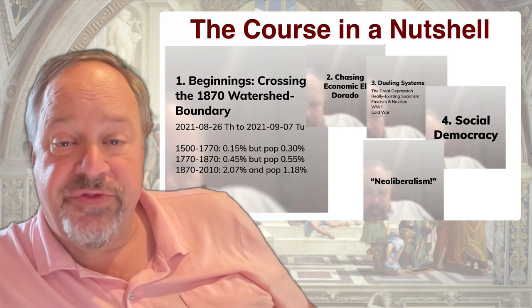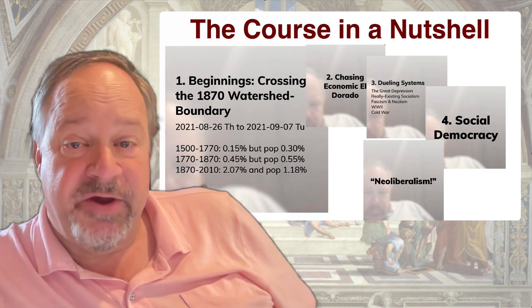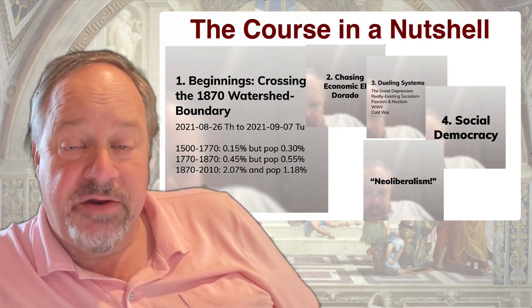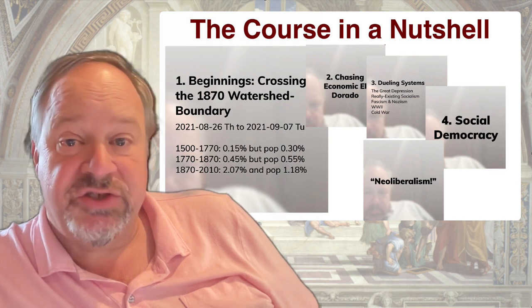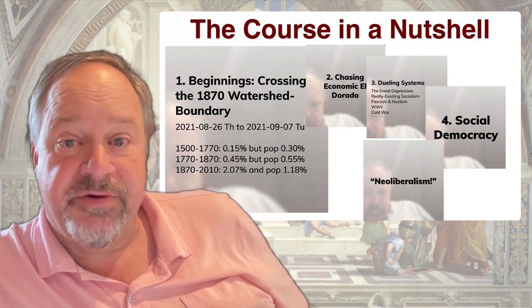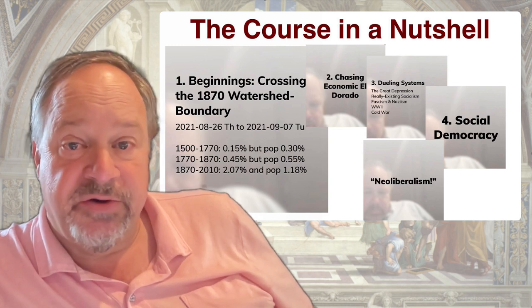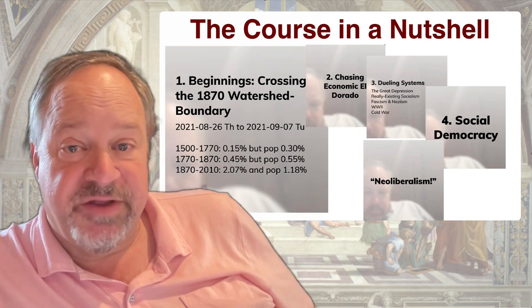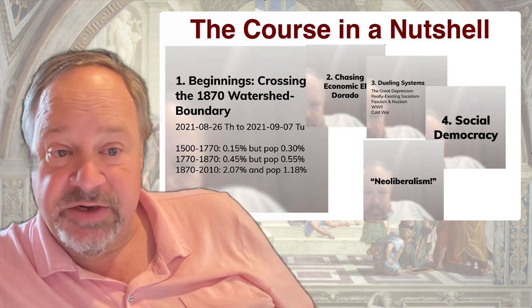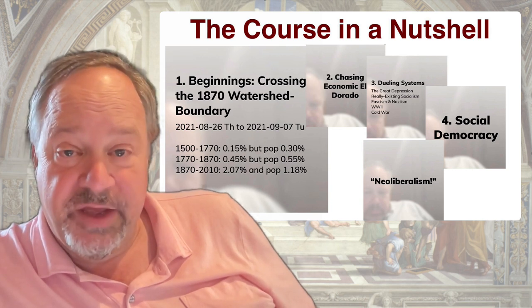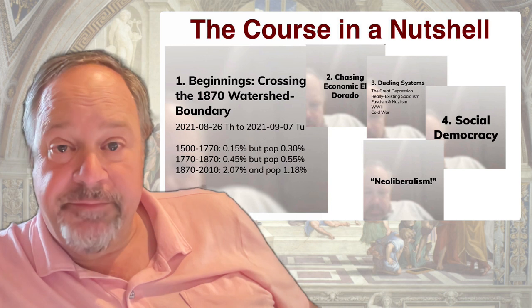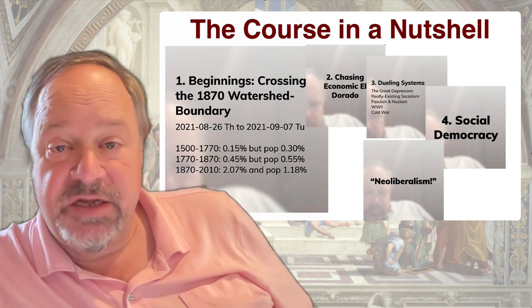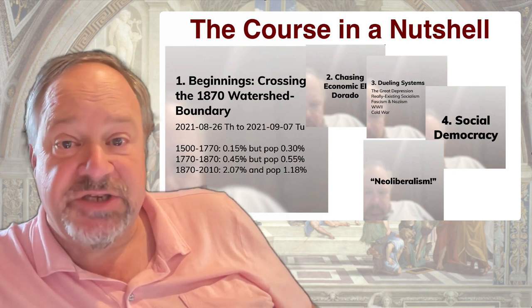Worldwide, the pace of growth of the ideas stock tripled from about 0.15% to about 0.45% per year. And in what was to become the global north — in the circle of economies within 300 miles of the port of Dover on the southeastern corner of England — the pace of technological progress discovered, developed, and deployed was perhaps twice as great, perhaps 0.9% per year. But worldwide, population grew at 0.55% per year, so there was a little improvement.